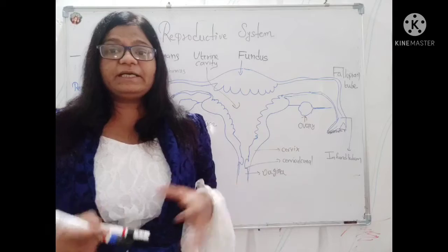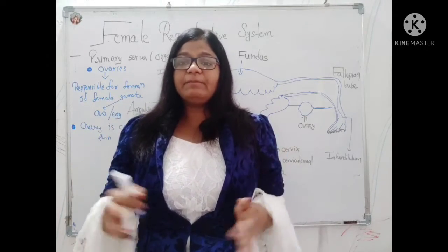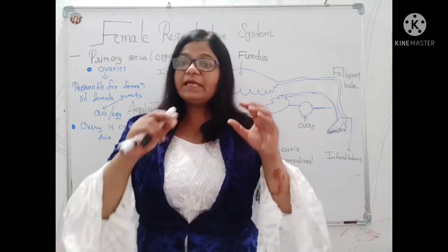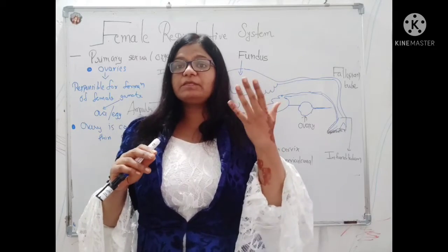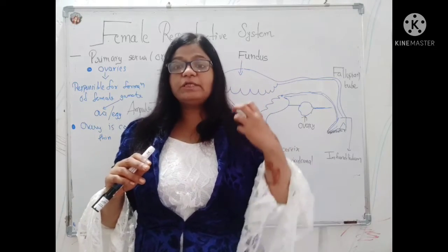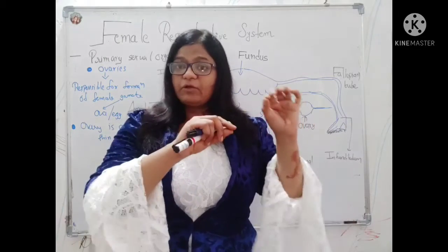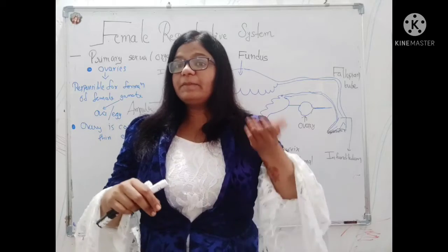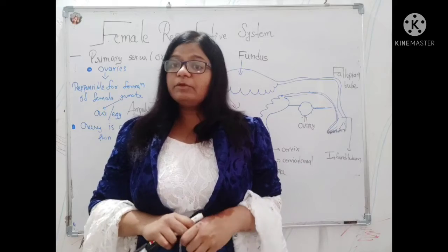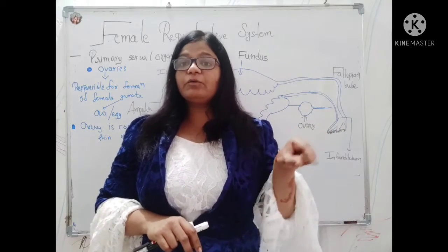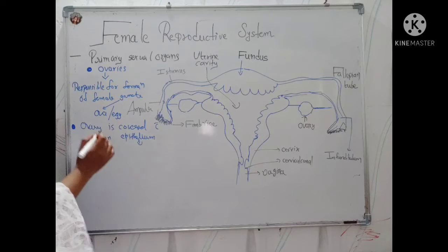We know that the uterus is the part where fetal development happens. Fetal development means that in sexual reproduction, when there is mating of the ovum and sperm, this mating leads to the first formation of the zygote. From the zygote there will slowly be the embryogenesis process — zygote to embryo and embryo to fetus, meaning the baby who is now ready for delivery. This whole process of fetal development is ongoing in the uterus, so the ovary is connected via thin epithelium to the uterus.